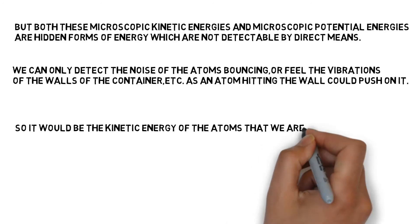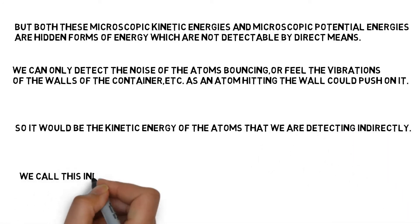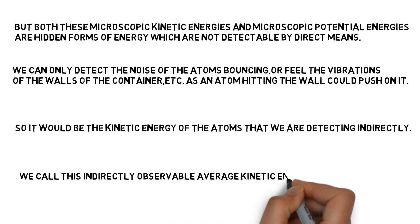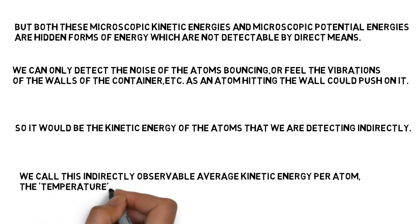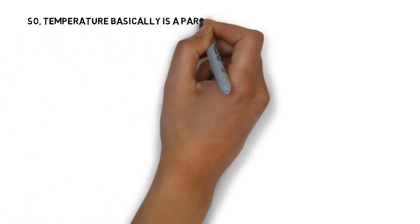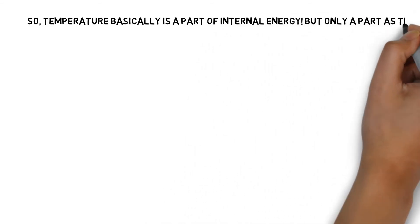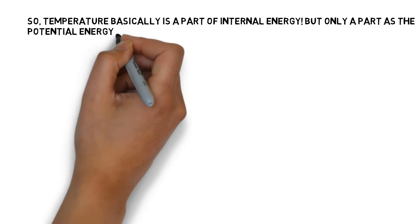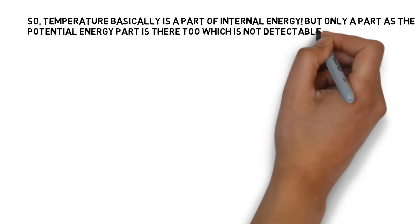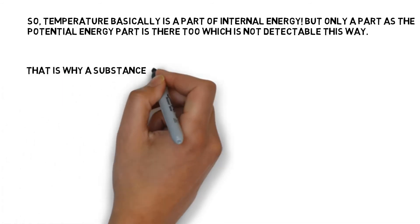We call this indirectly observable average kinetic energy per atom the temperature. So temperature basically is a part of internal energy, but only a part, as the potential energy part is there too, which is not detectable this way as we are detecting the kinetic energy.